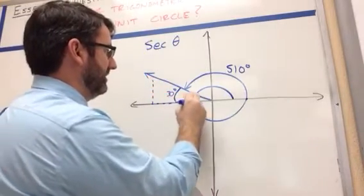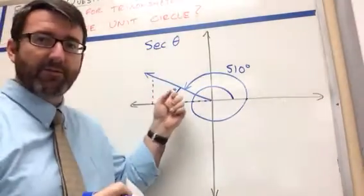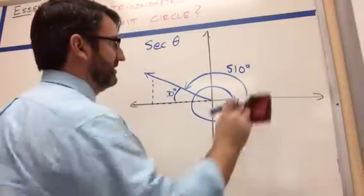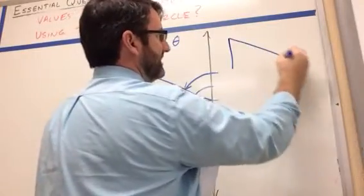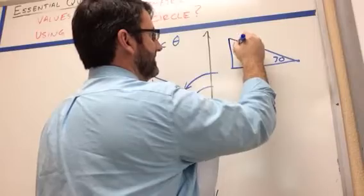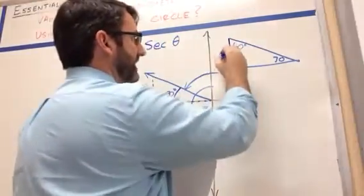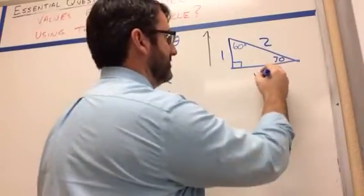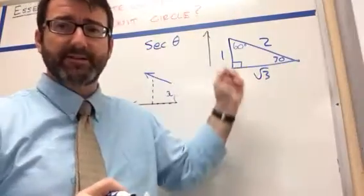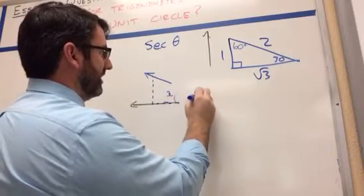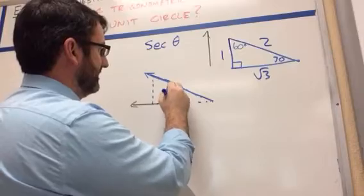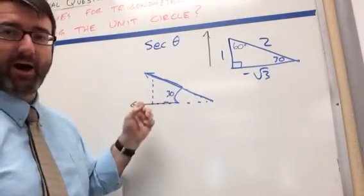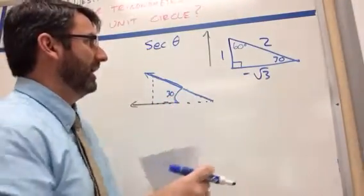We have 30 degrees here, and we can make a little triangle — one of our reference triangles. This is a 30-60-90 triangle. Our 30-60-90 reference triangle has 30 degrees, 60 degrees, and the 90 degree angle. The short side is length 1, the hypotenuse is length 2, and the other side is square root of 3. Now notice it's going backwards from the origin, so our x value is going to be negative, and we're going up so our y value will be positive.